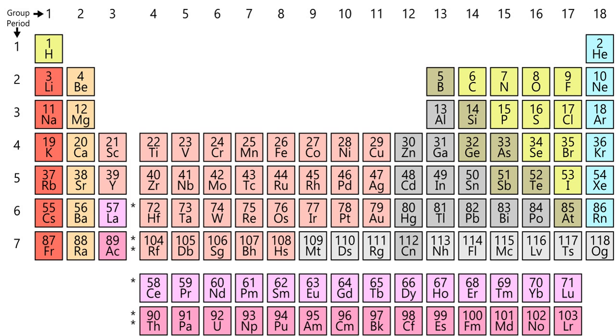Modern quantum mechanics explains these periodic trends in properties in terms of electron shells. As atomic number increases, shells fill with electrons in approximately the order shown. The filling of each shell corresponds to a row in the table.